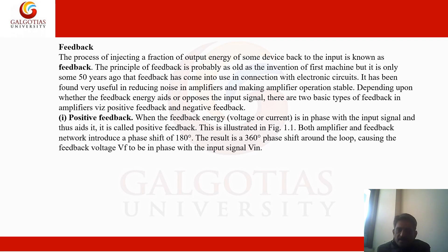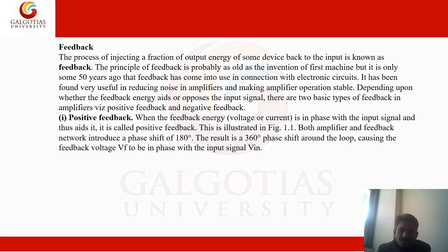The unlimited gain of an amplifier has to be kept under control, and to do so we use negative feedback. Depending on whether the feedback energy aids or opposes the input signal, there are two basic types of feedback in amplifiers: positive feedback and negative feedback. Positive feedback is used to increase the output, while negative feedback is used to control the output.